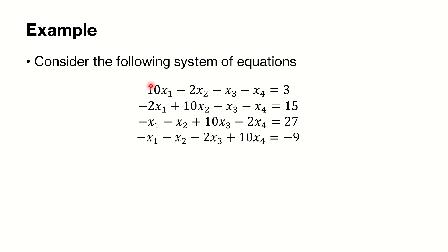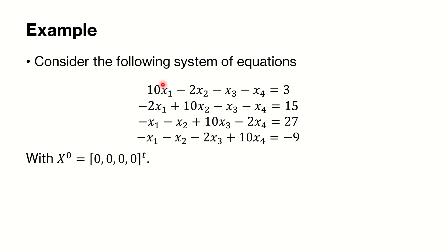For the example system — 10x1 − 2x2 − x3 − x4 = 3, −2x1 + 10x2 + ... and so on — we first check diagonal dominance. The coefficient of x1 in the first equation is 10, which must be greater than 2 + 1 + 1 = 4, which is true. Similarly, in the second equation the coefficient of x2 is 10, greater than 2 + 1 + 1. In the third equation, the coefficient of x3 is 10, greater than 1 + 1 + 2 = 4. We then take initial values x1⁰ = x2⁰ = x3⁰ = x4⁰ = 0, and solve equation 1 for x1, equation 2 for x2, equation 3 for x3, equation 4 for x4.